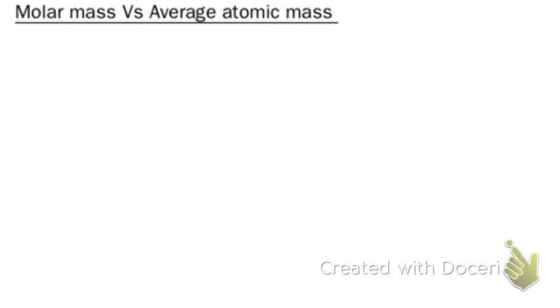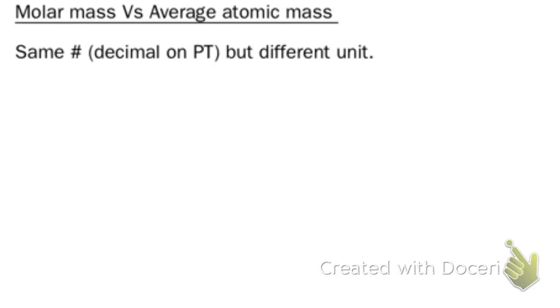All right, today we're going to talk about molar mass versus average atomic mass, and then we're going to do one more calculation involving the mole. These notes can go right under your last page of notes. So, molar mass versus average atomic mass, they are the same number. It is the decimal on the periodic table, but you use a different unit because they represent two different things.